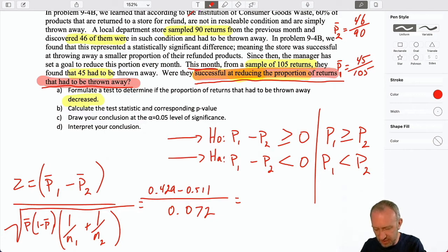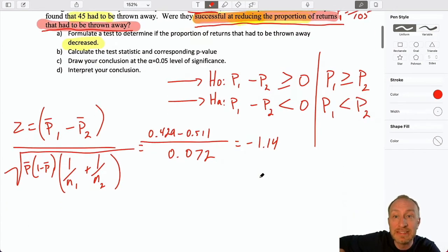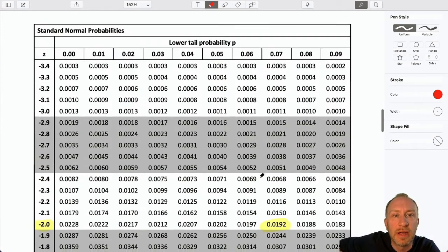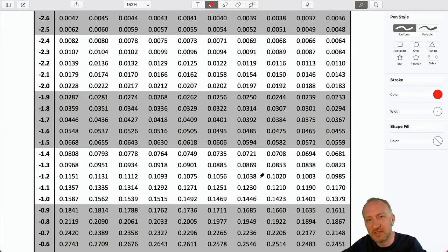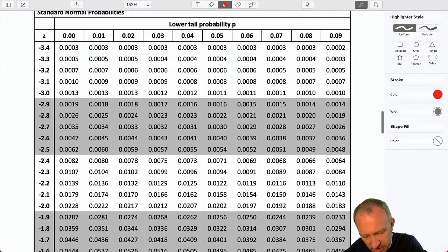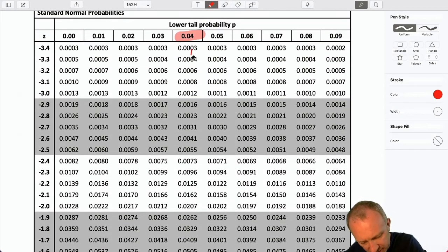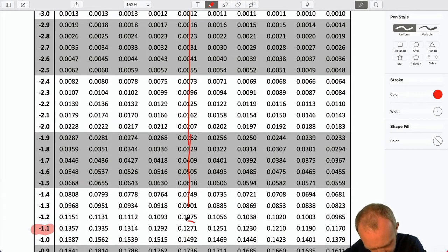So our test statistic is going to be 0.429 minus 0.511, divided by 0.072. So I have a test statistic here of negative 1.14. I'm rounding to two decimals. Now, the rest is the same as it's always been. I can go down to my Z tables, somewhere way down here, and I'm looking for negative 1.14. Here's my negative 1.14.